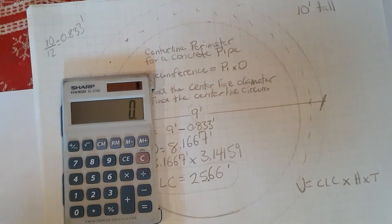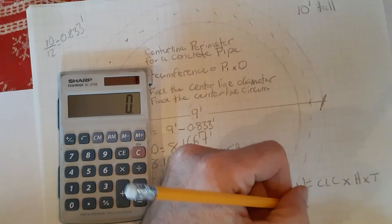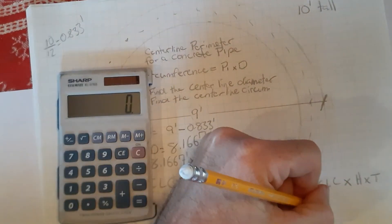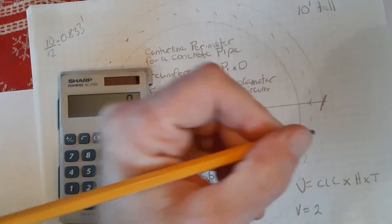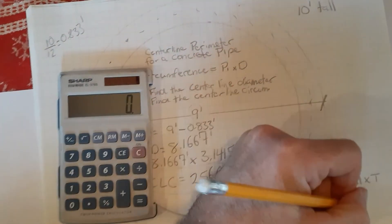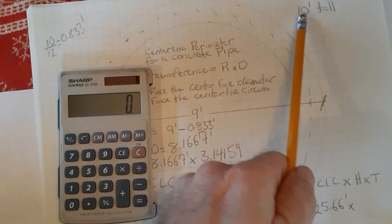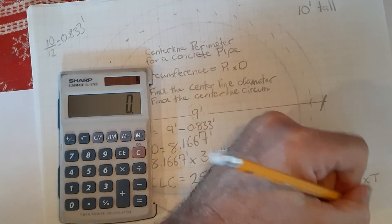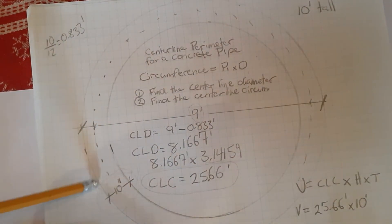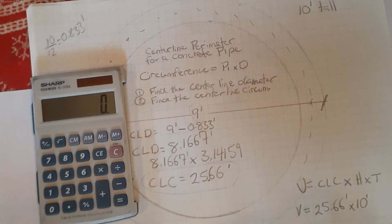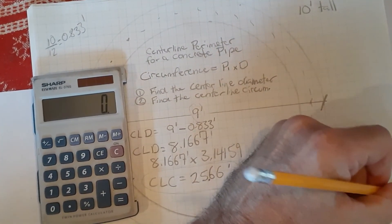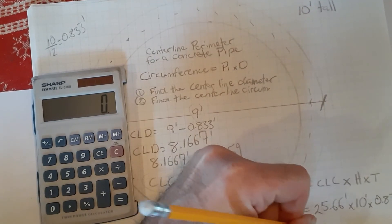So if we grab our calculator and get ready to go here, we can say that the volume is equal to our center line circumference. So our center line circumference is 25.66 feet, multiply that by the height—we have a pipe that is 10 feet tall—and multiply finally by our wall thickness, 10 inches. We can't have inches here, it's feet, feet, and feet, so this is going to be multiplied by 0.833.